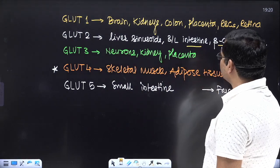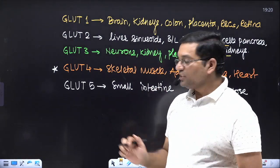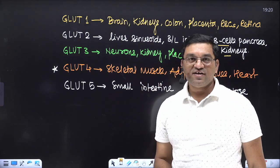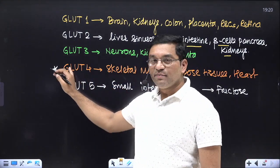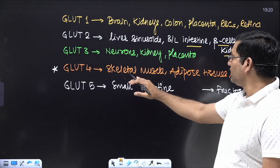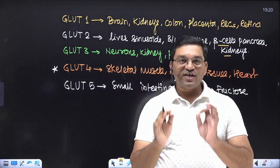GLUT-3 is present in neurons, kidney, and placenta. GLUT-4, which is insulin-dependent, is present in skeletal muscle, adipose tissue, and heart. GLUT-5